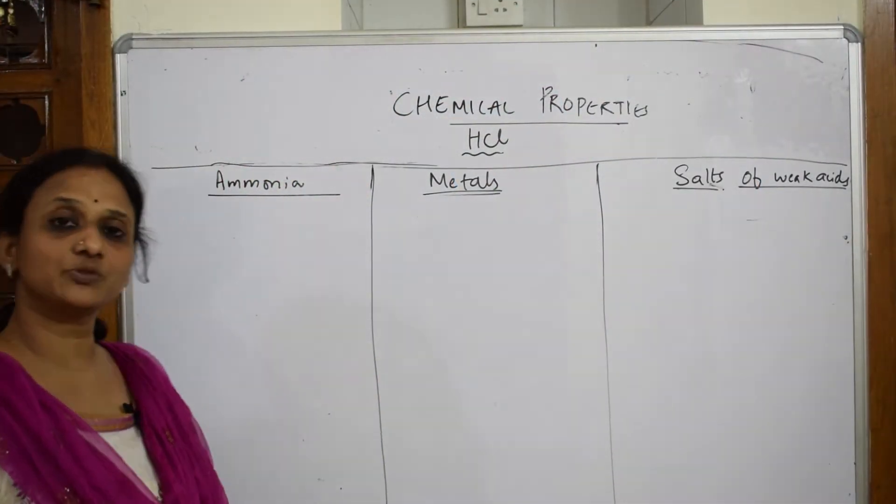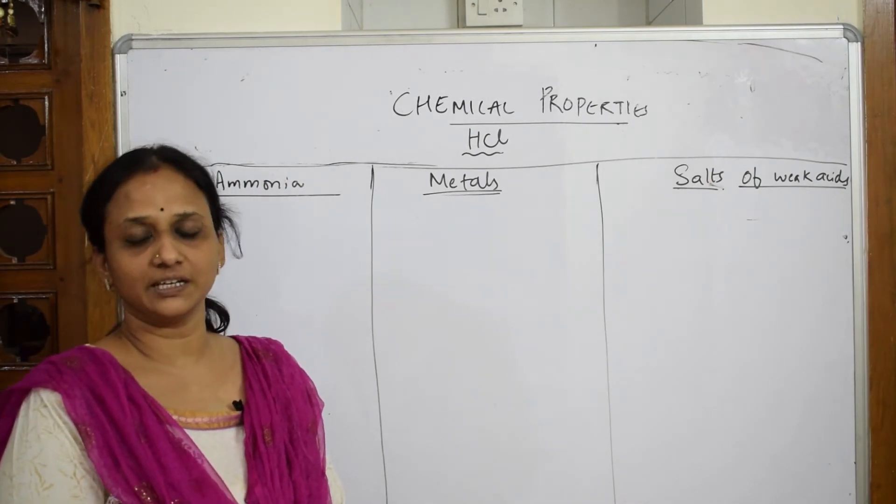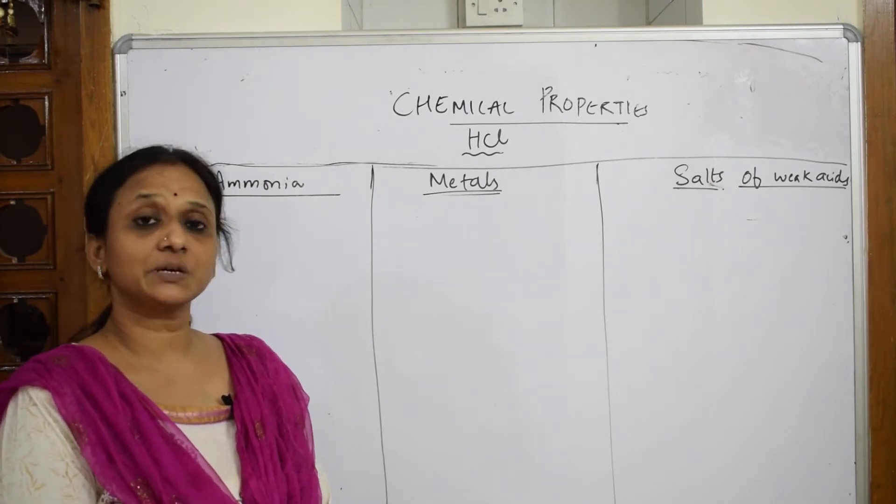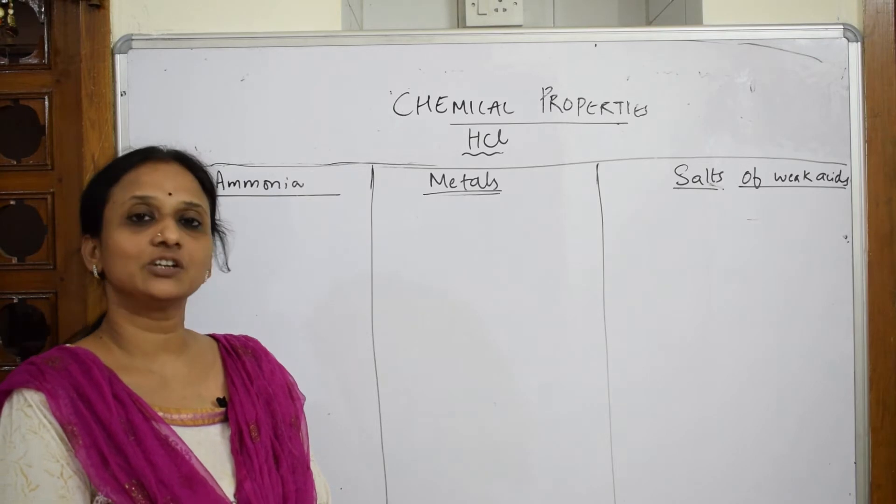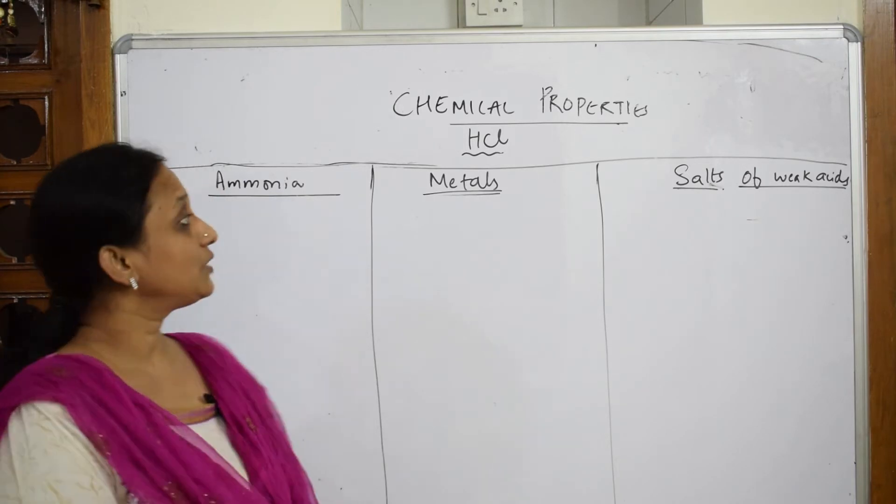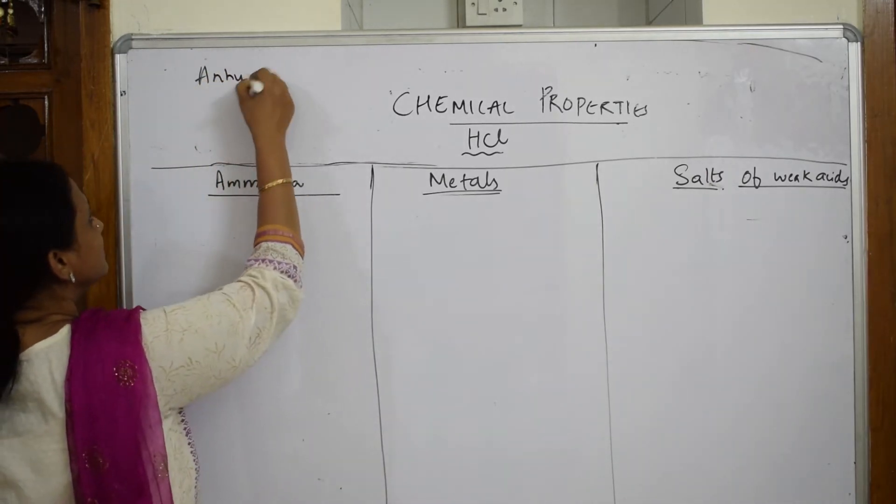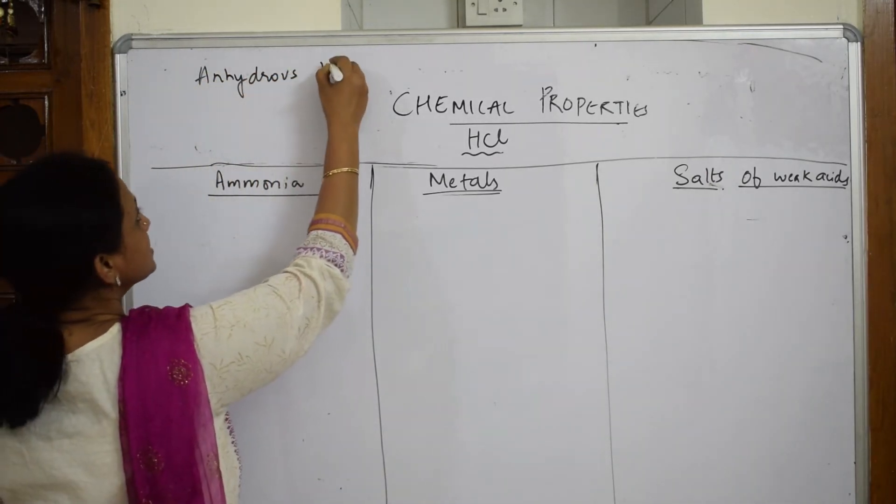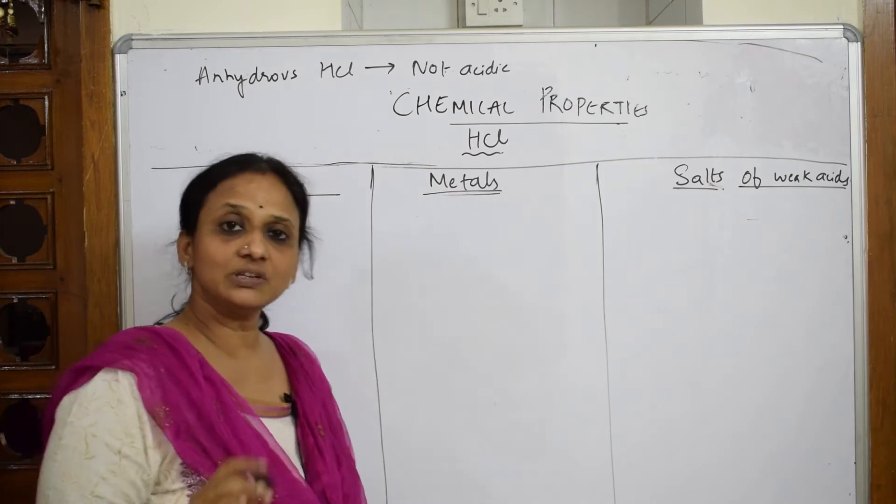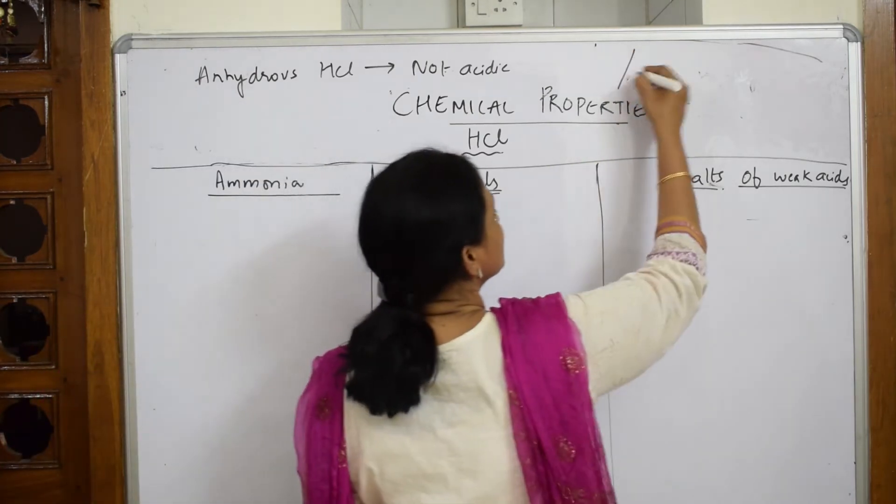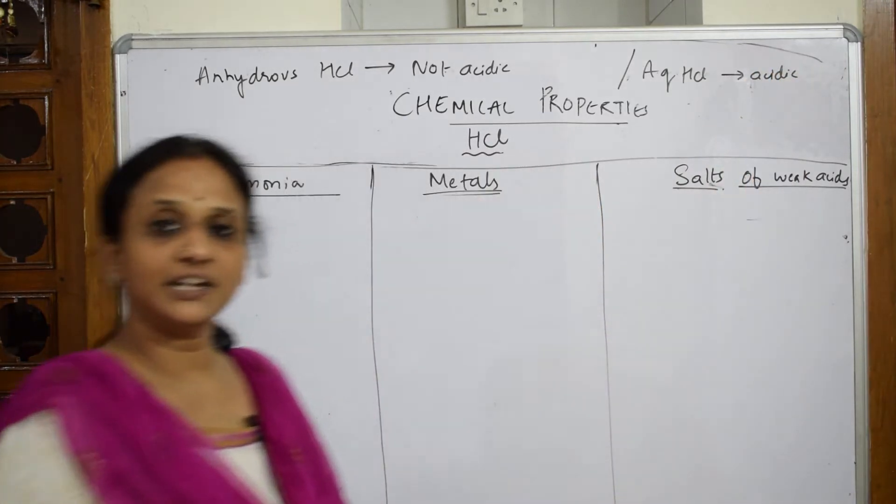Now let's start with HCl compound, the next compound after chlorine. Whenever I speak about HCl, we have done the preparation and chemical properties, which are basically not as complicated as chlorine. The most important thing you have to remember is anhydrous HCl is not at all acidic. It is acidic only in aqueous medium because it dissociates into ions. So aqueous HCl is only acidic in nature. Never write anhydrous HCl is acidic.